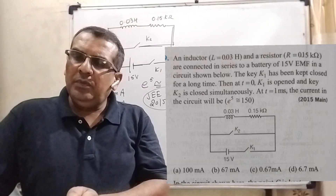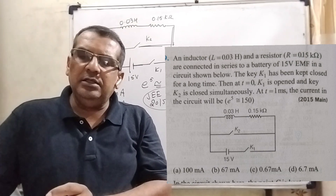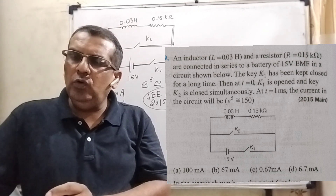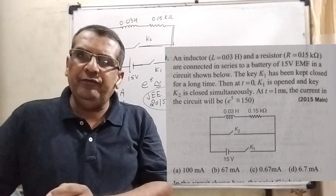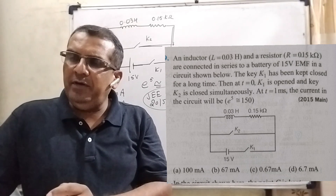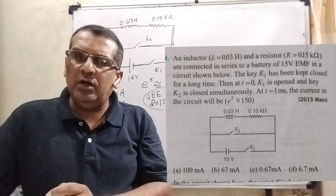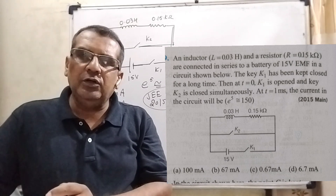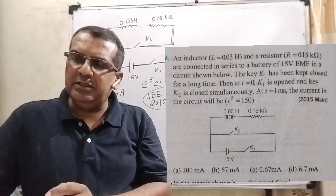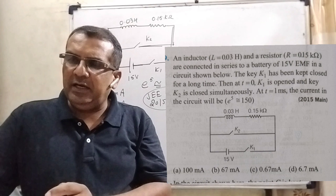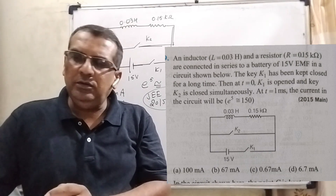Now here is the question. An inductor L equal to 0.03 Henry and a resistor R equal to 0.15 kilo ohm are connected in series to a battery of 15 volt EMF. In the circuit shown, the key K1 has been kept closed for a long time. Then at T equal to 0, K1 is opened and the key K2 is closed simultaneously. At T equal to 1 millisecond, the current in the circuit will be — here we have to find out the current.